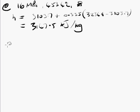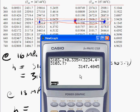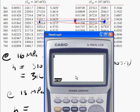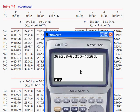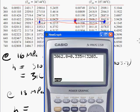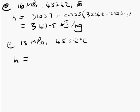Same thing at 18 MPa. This time we have 3062.8 plus 0.335 times 3203 minus 3062.8, which equals 3109. That looks like it's between 3062 and 3203. Yeah, that looks right. 3109.8. Don't forget the units.